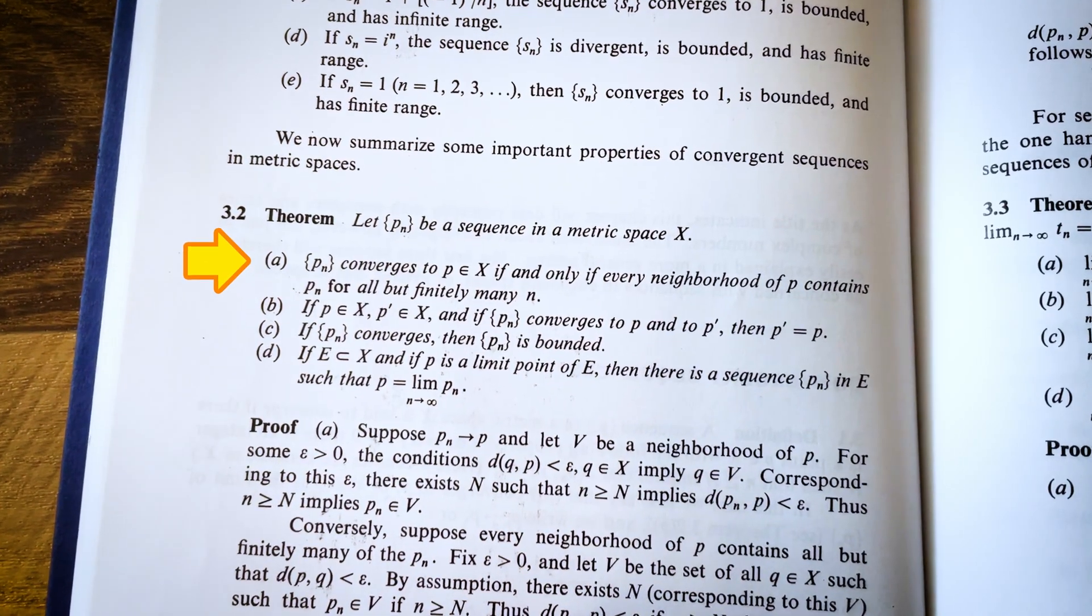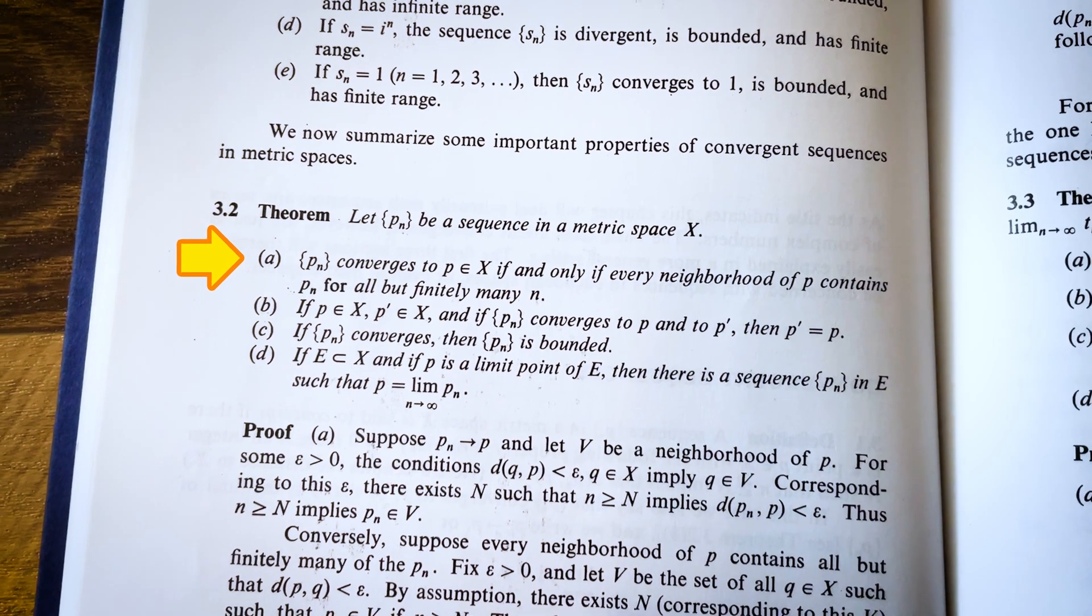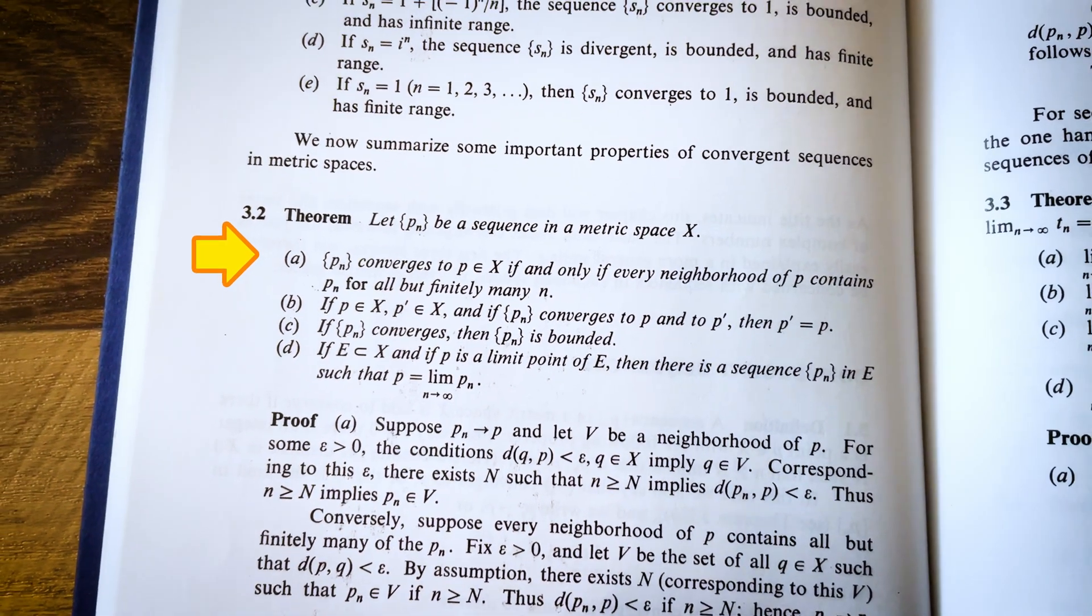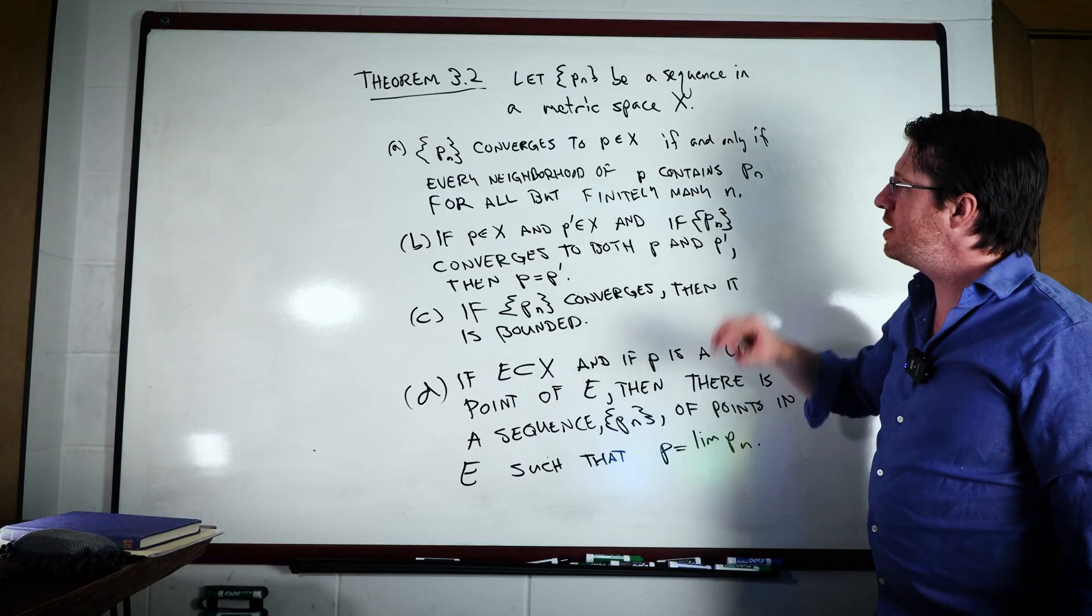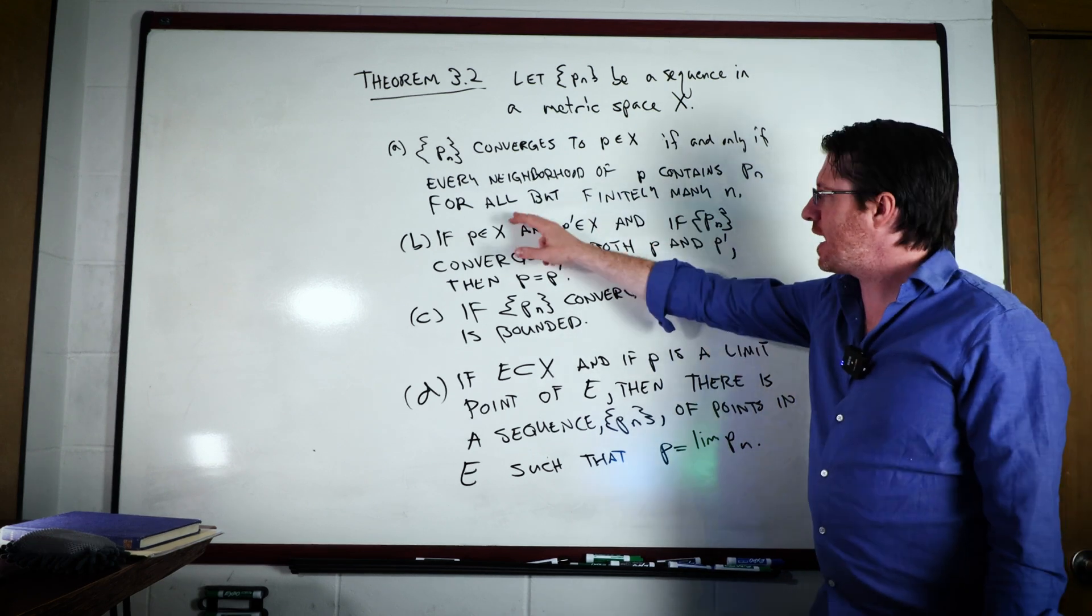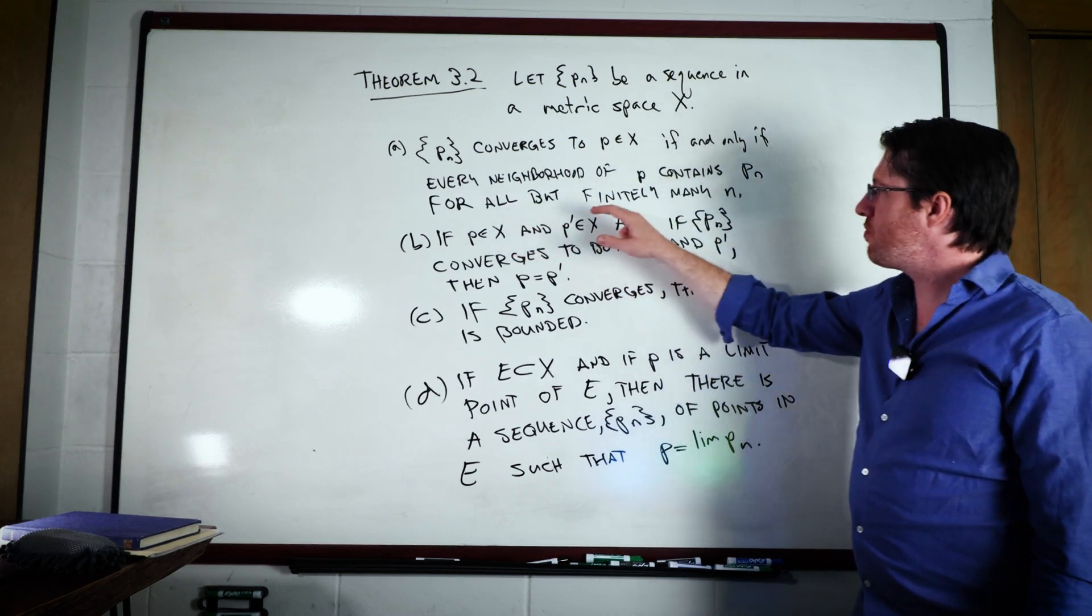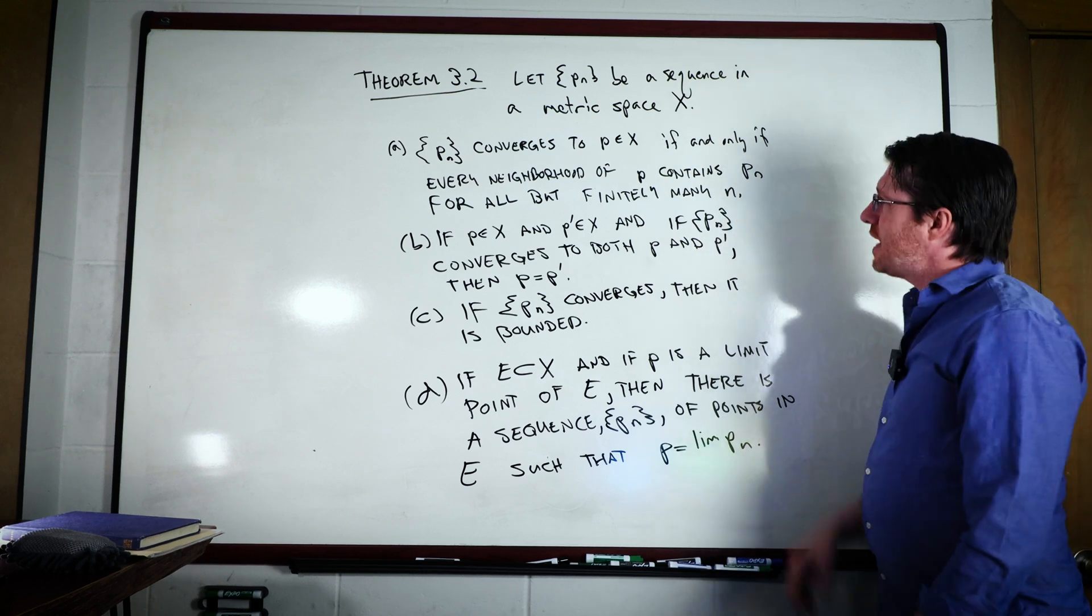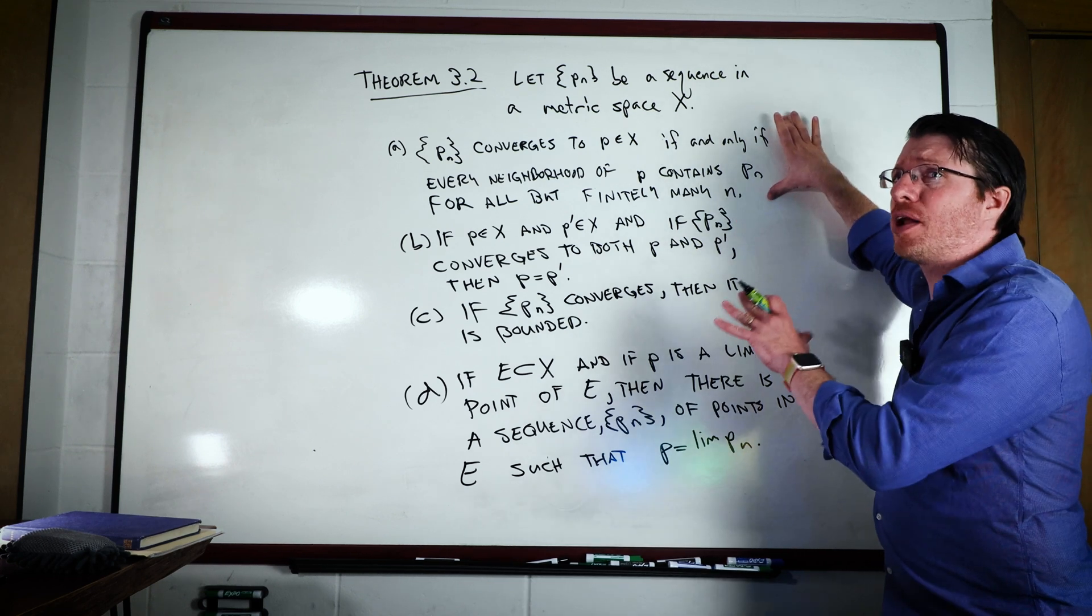Now theorems can actually preview some really deep concepts coming up later in our studies. For instance, this first one seems like just a neat fact, but this if and only if really makes a difference, and it means that this could be an alternative definition of a limit of a sequence for metric spaces. What should stand out to you is that this alternative definition doesn't actually use the metric at all. PN converges to P if for every neighborhood of P, that neighborhood contains all but finitely many of these PNs. And this is actually how it's defined in topology.